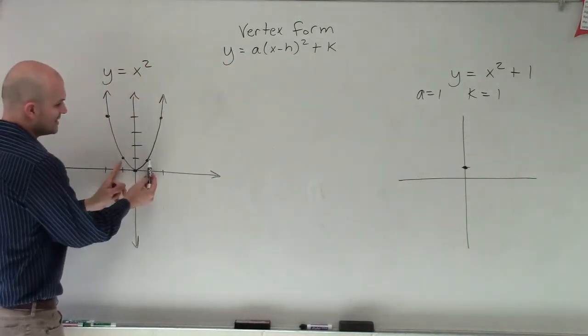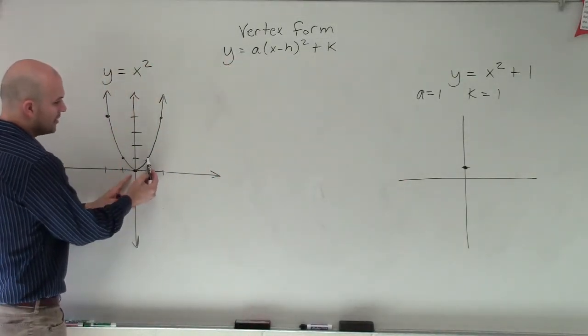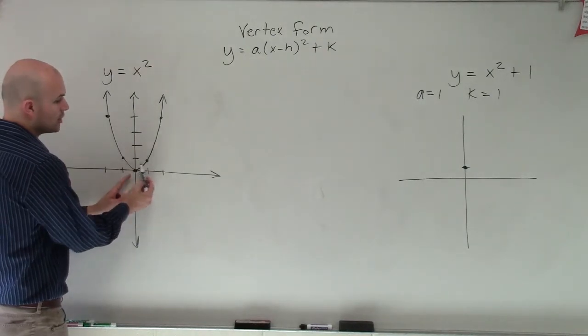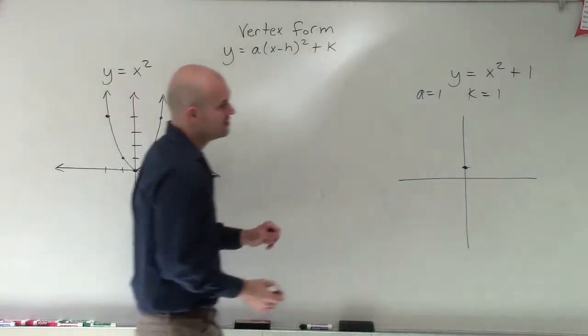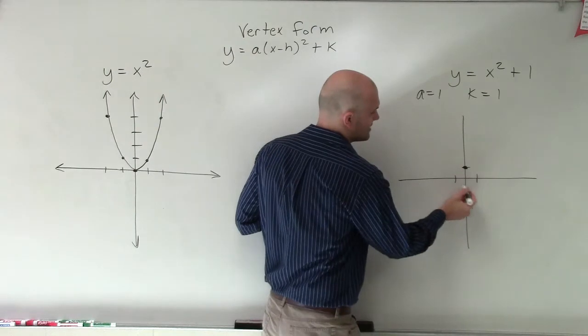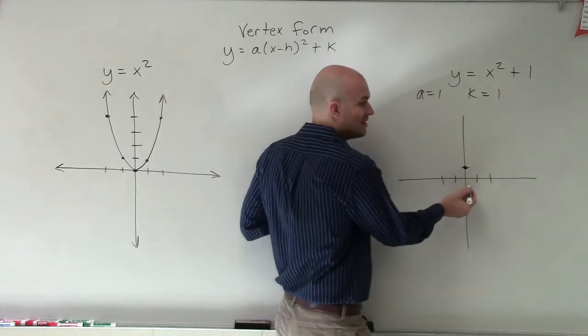Therefore, the relationship between the next two points is going to be over 1, up 1. And then the point after that will be over 2, up 4. So I can create that relationship, because my a value is exactly the same.